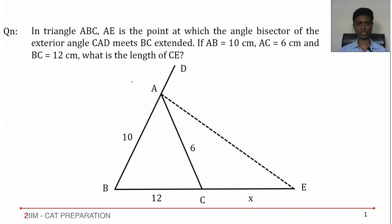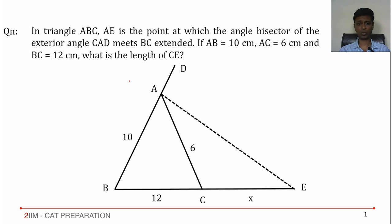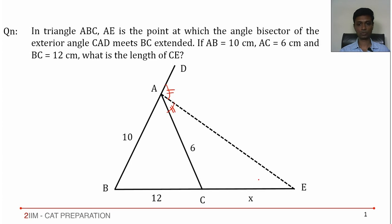I'm going to do two questions on the angle bisector theorem. In triangle ABC, E is the point at which the angle bisector of exterior angle CAD meets BC extended. E is the point at which the angle bisector AE meets BC extended, so this angle equals this angle. AB equals 10, AC equals 6, BC equals 12. Find the length of CE — call this x.